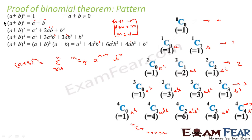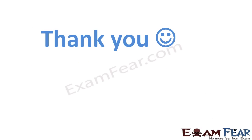So here what we have done: we found the pattern by expanding (a+b)ⁿ for various values of n, and based on that pattern we derived the formula that (a+b)ⁿ = Σ nCr · a^(n−r) · b^r. In the last slide we proved the formula using induction; in this slide we have proved the same formula using pattern. Thank you.